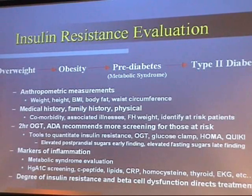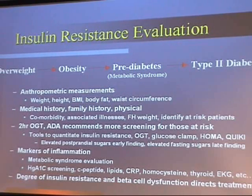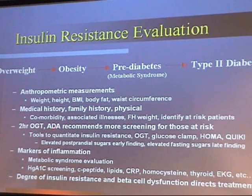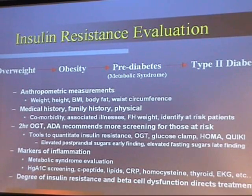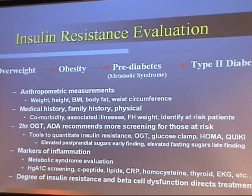For evaluation, it's important to understand this is a progressive condition — from being overweight to eventually developing type 2 diabetes. In the office we measure weight, height, BMI, body fat, and waist circumference, and take a full family and medical history to identify comorbid conditions. Since two-thirds of the population have this issue, identifying patients at risk is straightforward. We use the oral glucose tolerance test — the two-hour OGTT — as both a screening tool and a crude staging tool for insulin resistance, as recommended by the American Diabetes Association and Medicare.